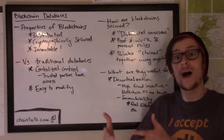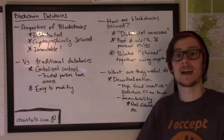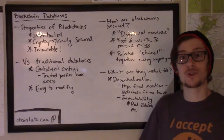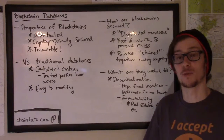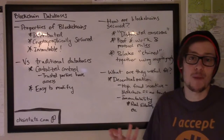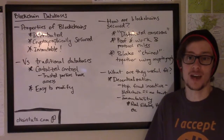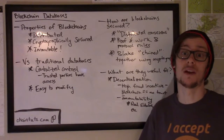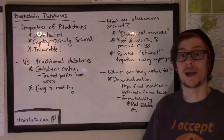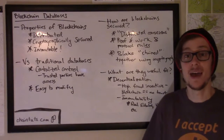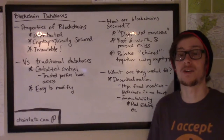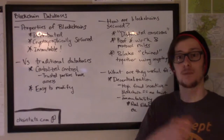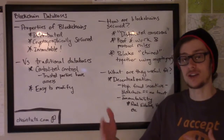Every block contains a summary of the data included in the previous block, and because of this cryptographic puzzle work done through proof of work, it becomes nearly impossible to modify the data over time. We do have some videos describing how proof of work is conducted more in-depth if you're curious, but it is an integral part of securing the blockchain when combined with this concept of chaining blocks each step of the way.